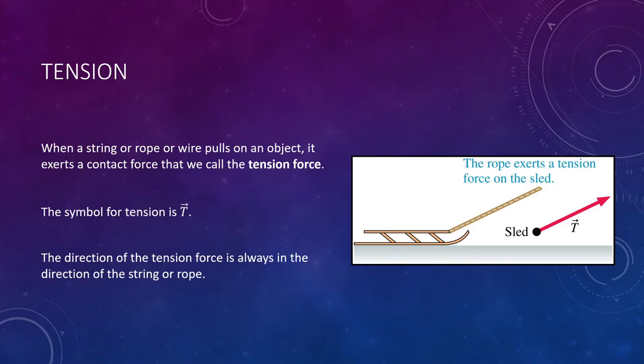Another very common force that we encounter in this course is tension. When a string or rope, or sometimes a wire, pulls on an object, it will exert a contact force that we call tension. Tension is given by the capital letter T, and its direction is always in the direction of the string or rope. You see in the example on the right-hand side, a sled being pulled by a rope. The direction of your tension force is in the direction of the rope. So in this case, up and to the right. All things considered, it's another one that's fairly easy to remember the direction of. Just draw an arrow along the rope that you're using to pull an object with, and that is your direction of the tension force.